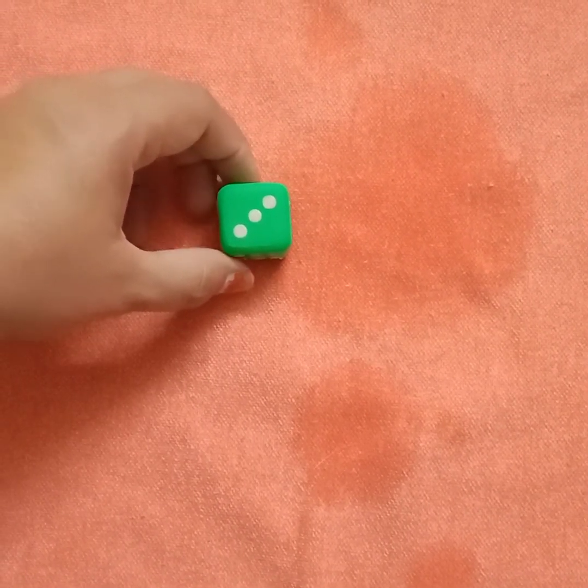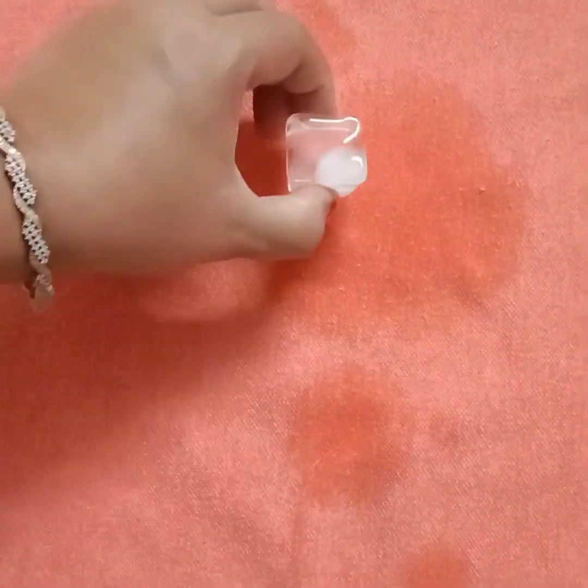Examples of 3D shape of cube are dice, ice cube and a container.